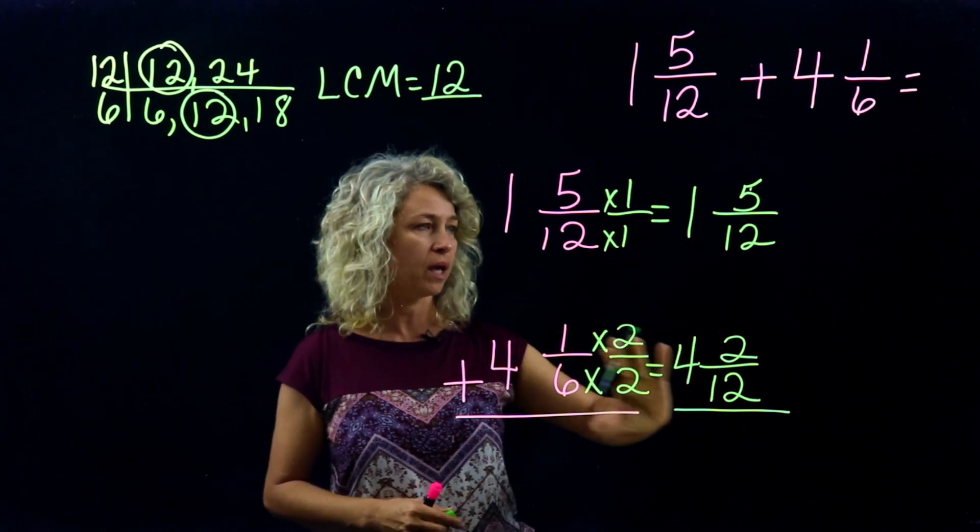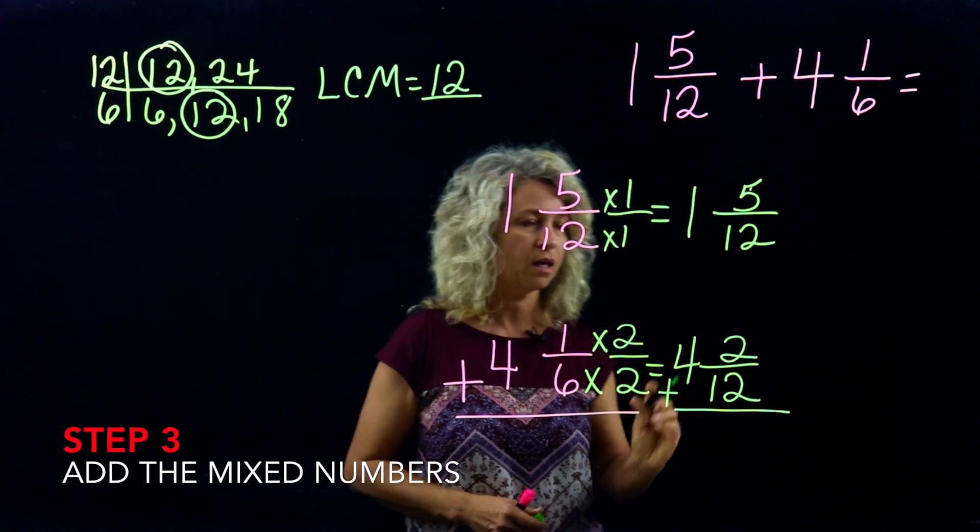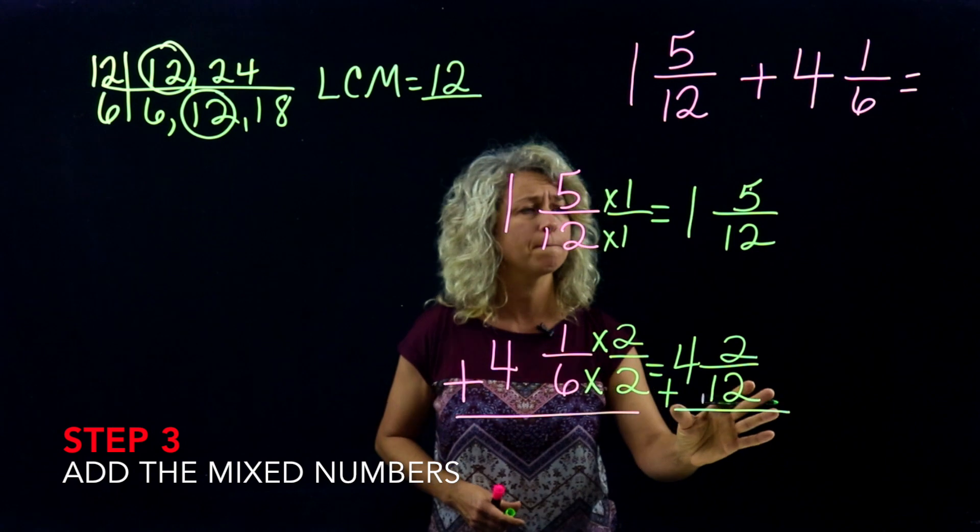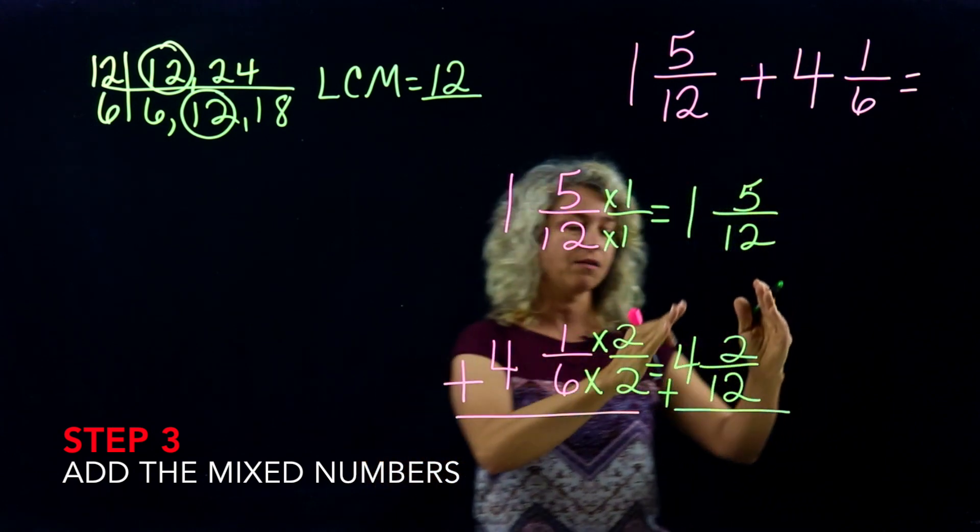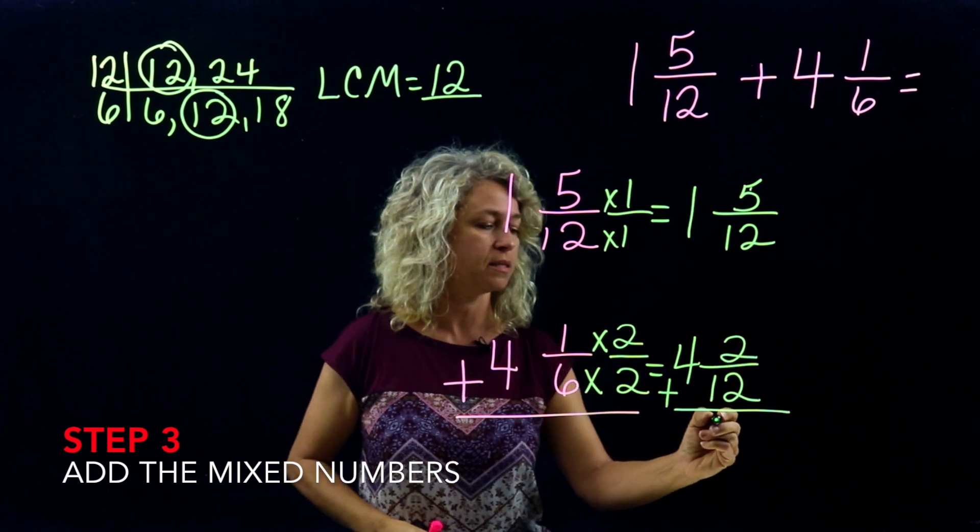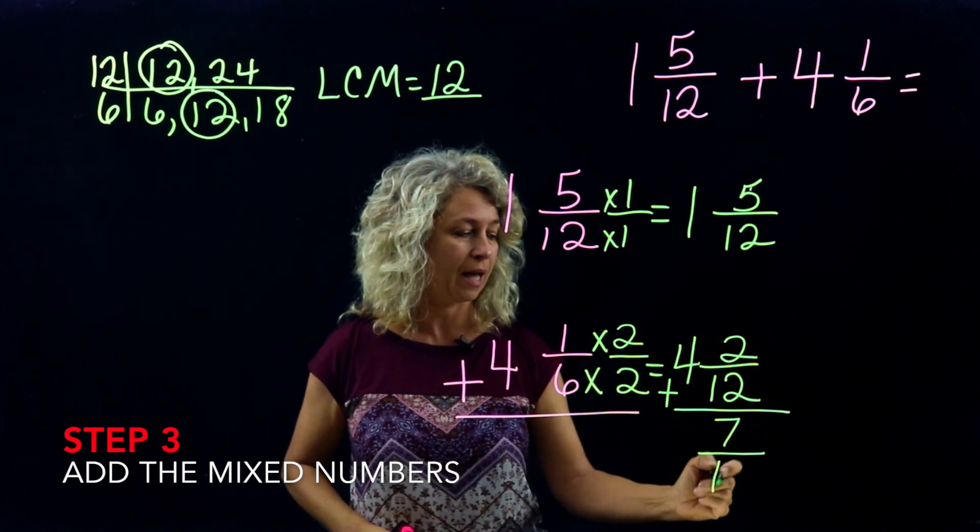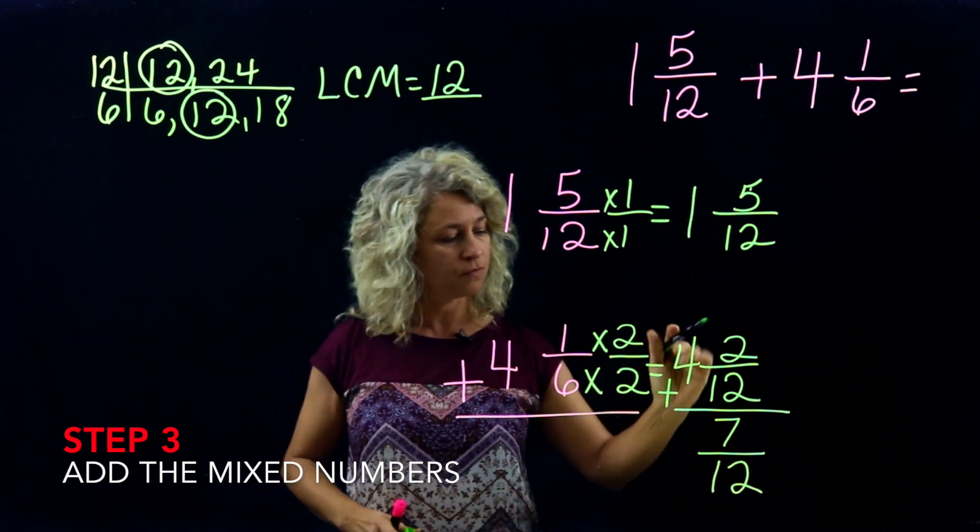Alright, so now we're ready to work the problem, and you can put your sign again so you won't forget what you're doing. Here, now here is your problem. We're finished with this over here. Look at your numerator: 5 plus 2 is 7. The denominator always stays the same. Add the whole numbers: 1 plus 4 is 5.